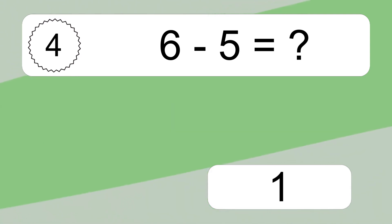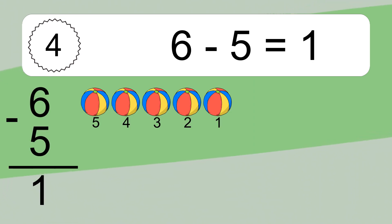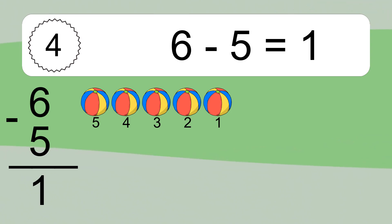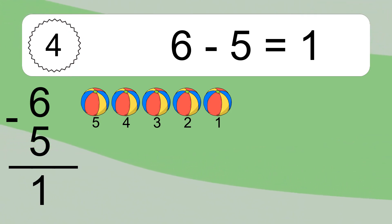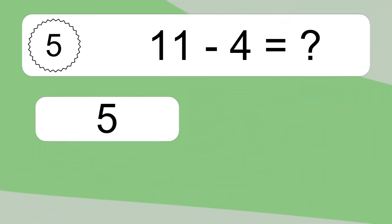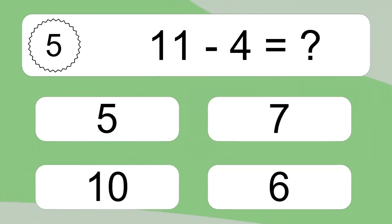6 minus 5 equals what? 6 minus 5 equals 1. Let's count it: 5, 4, 3, 2, 1.